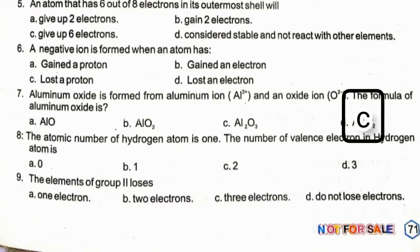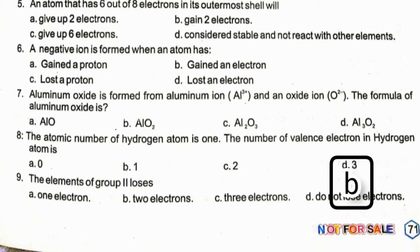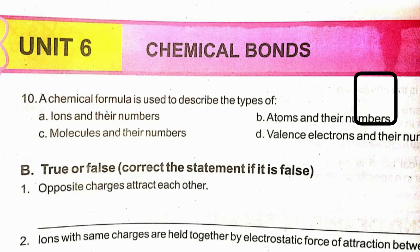The atomic number of hydrogen atom is 1. The number of valence electrons in a hydrogen atom is option B. The element of group 2 loses option B electrons. A chemical formula is used to describe the types of option B atoms and their numbers.